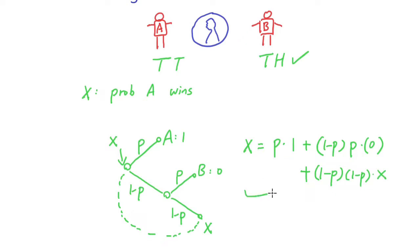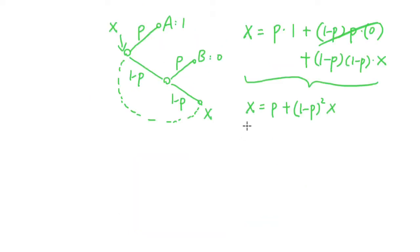So now we solve this equation in terms of X. We have X equal to P plus, this 0 is going to cancel out this entire term. So we have 1 minus P square X. Now let's do some algebra. X is equal to P plus 1 minus 2P plus P square times X.